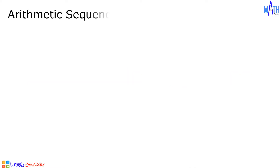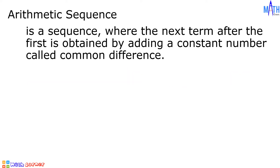An arithmetic sequence is a sequence where the next term after the first is obtained by adding a constant number called common difference. An example of an arithmetic sequence is 5, 9, 13, 17, and the pattern continues without end.